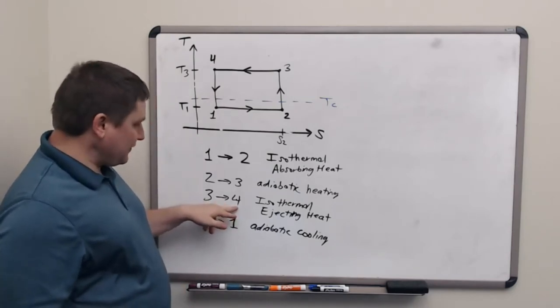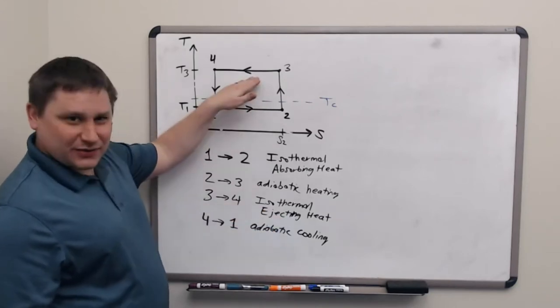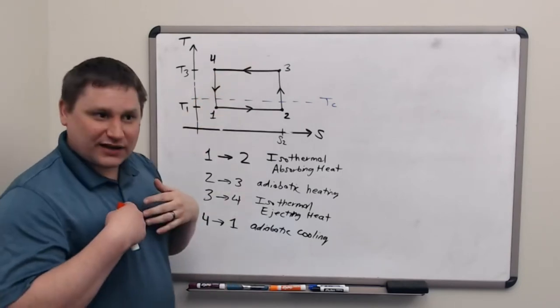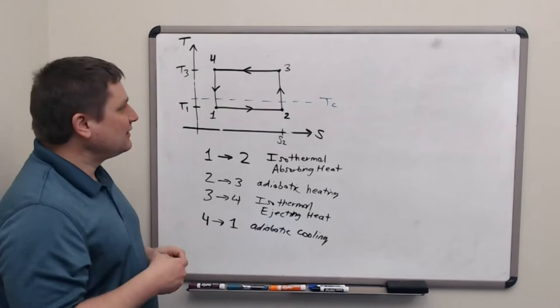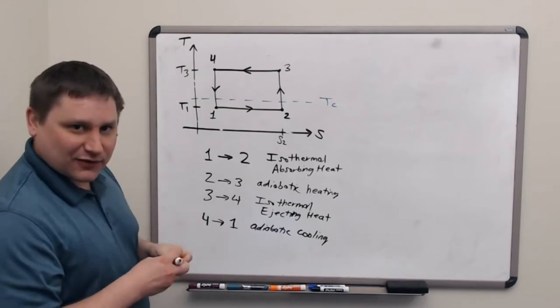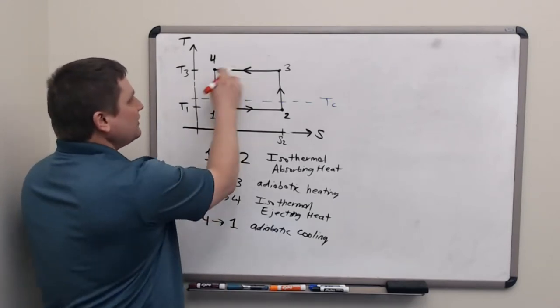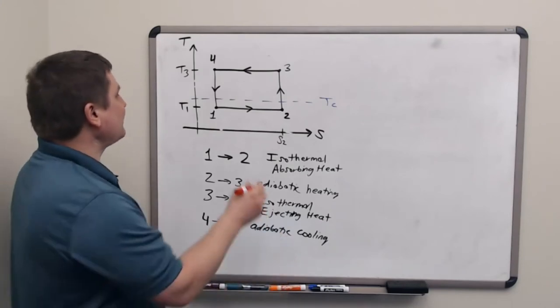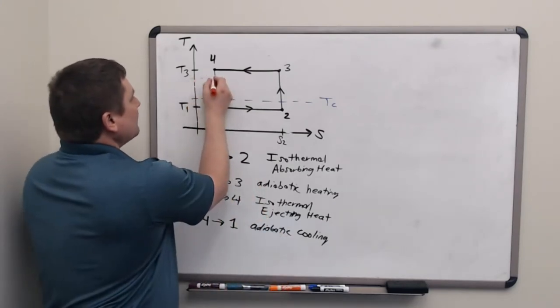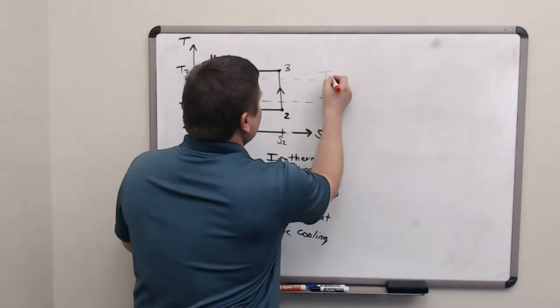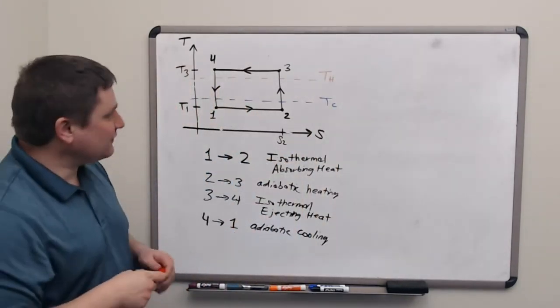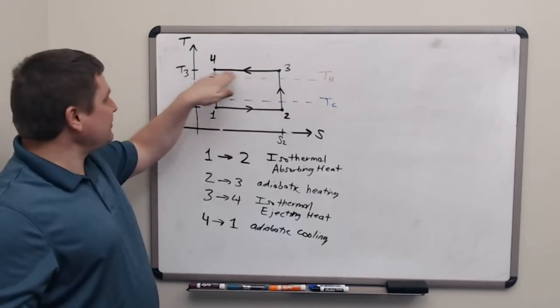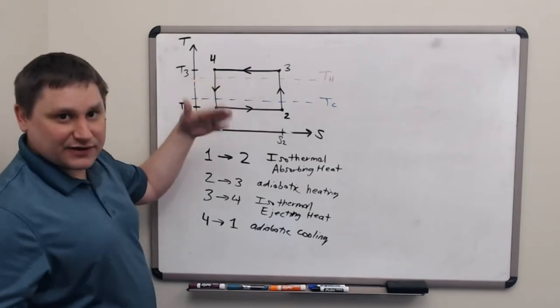The other interesting step is from 3 to 4. Here we are ejecting heat, but we're doing that when our working substance is at its highest temperature. So we're getting heat out of the system when it's hot. So that's also backwards from the engine. To do that, we have to eject heat to some reservoir, some other object that's colder than the current temperature of the working substance. Let me draw a line for a hot reservoir right there, just kind of the minimum amount below the temperature T3 to allow 3 to 4 process to eject heat.